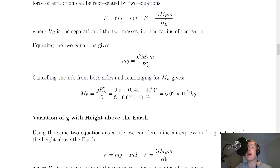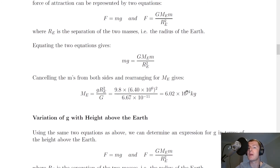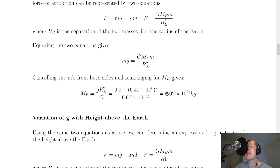Substituting in the values for gravitational field strength on Earth, the radius of the Earth, and the universal constant of gravitation, we get 9.8 times (6.40 times 10 to the 6) squared divided by 6.67 times 10 to the minus 11, which equals 6.02 times 10 to the 24 kilograms. The radius of the Earth and the universal constant of gravitation are on the datasheet, and the mass of the Earth is also provided, but we've shown we can estimate it using Newton's Law of Universal Gravitation.